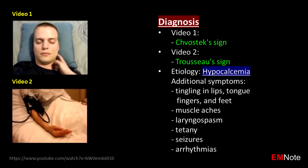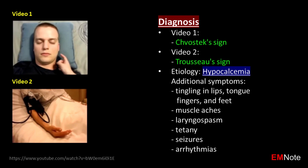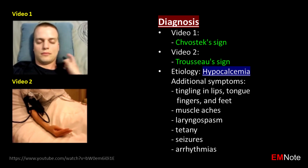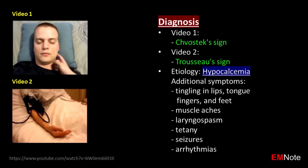The sign demonstrated in video 2 is Trousseau's sign — another clinical finding associated with hypocalcemia, elicited by inflating a blood pressure cuff above systolic pressure on the arm. A positive test is confirmed if the hand involuntarily contorts into a main d'accoucheur pose, with wrist bent, thumb drawn in, and fingers arched.